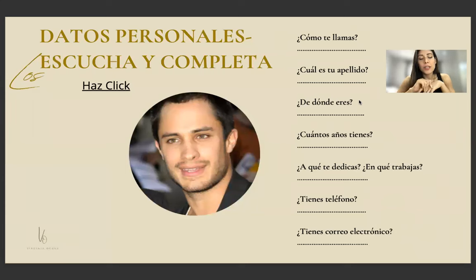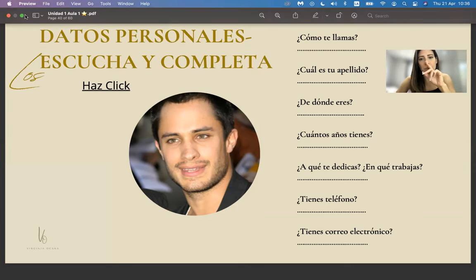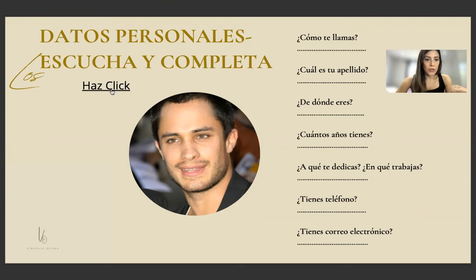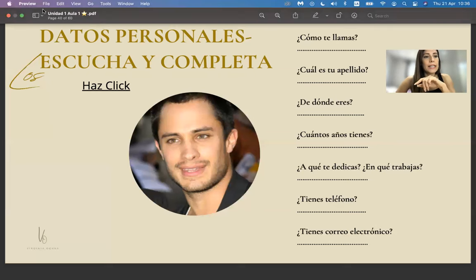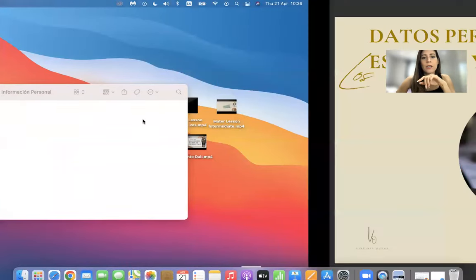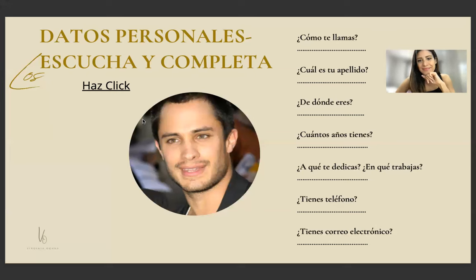The phone number is said in hundreds, so you might be struggling there — don't worry, we haven't seen the hundreds yet. I'll play it one more time because I want you to look at the screen and listen at the same time. You can get these slides with the audio on my website — go to Class 3, Unit 1. ¿Cómo te llamas? Me llamo Gael. ¿Cuál es tu apellido? García Bernal. ¿De dónde eres? Soy de México. ¿Cuántos años tienes? Tengo 42 años.